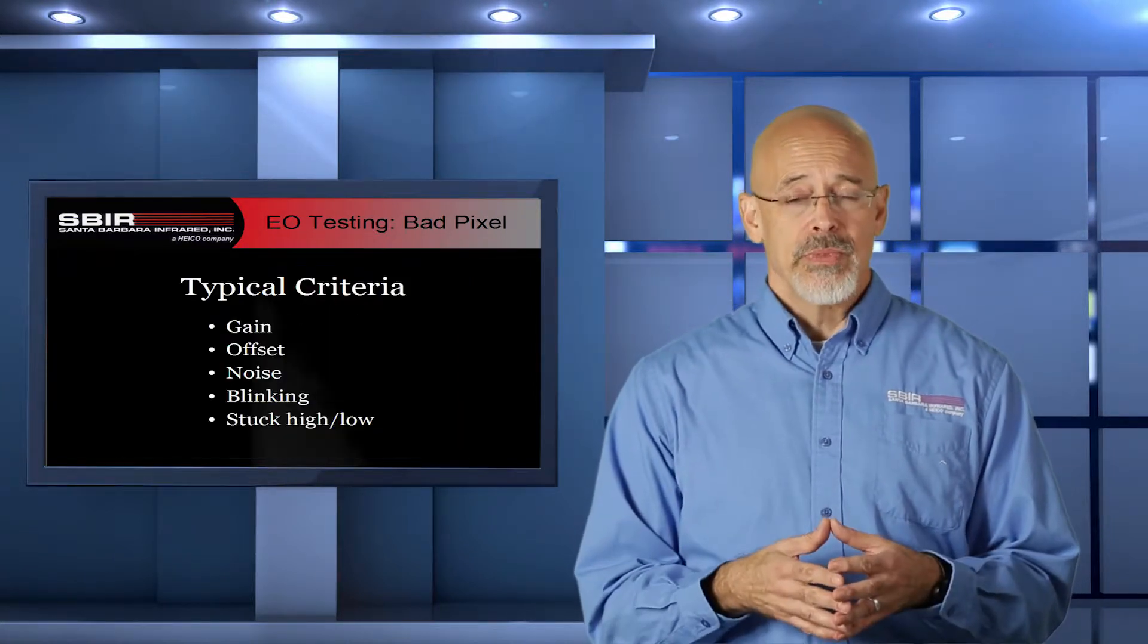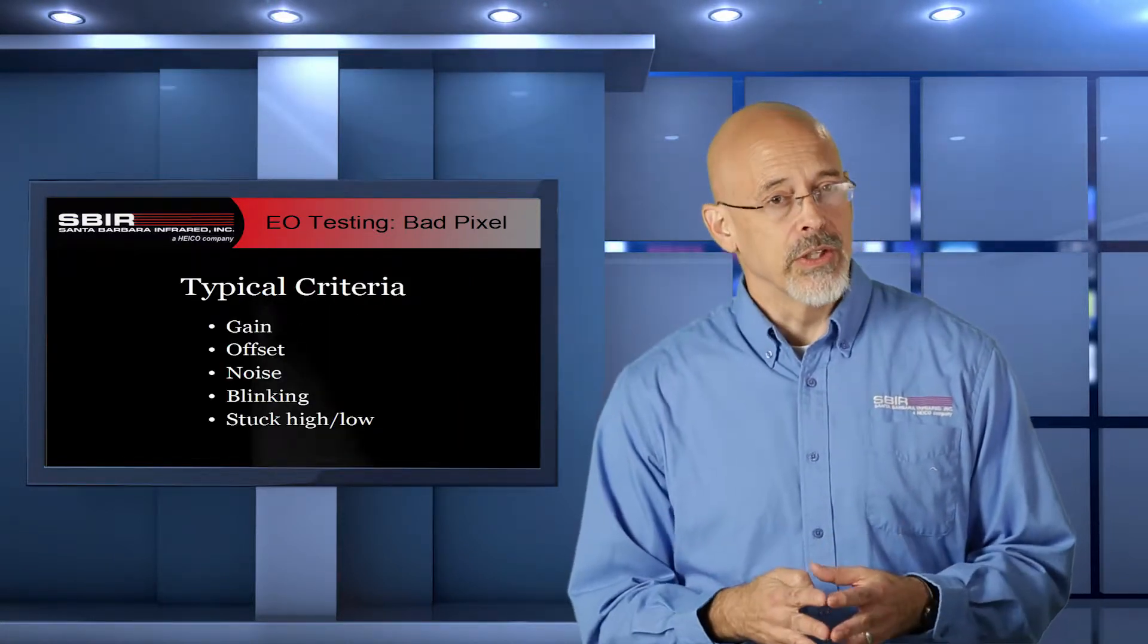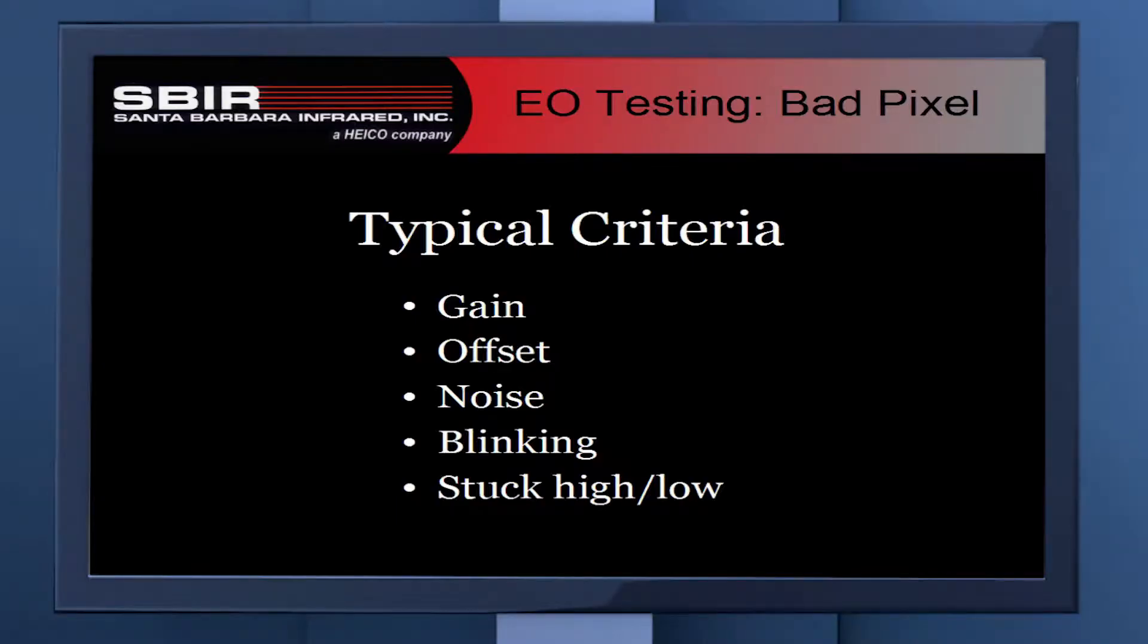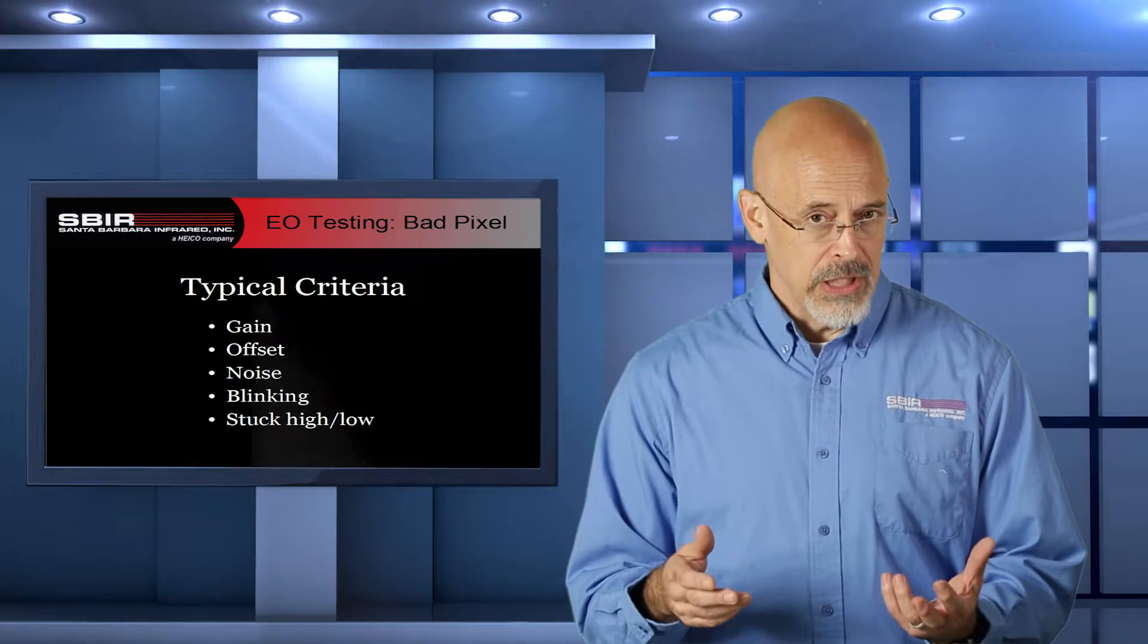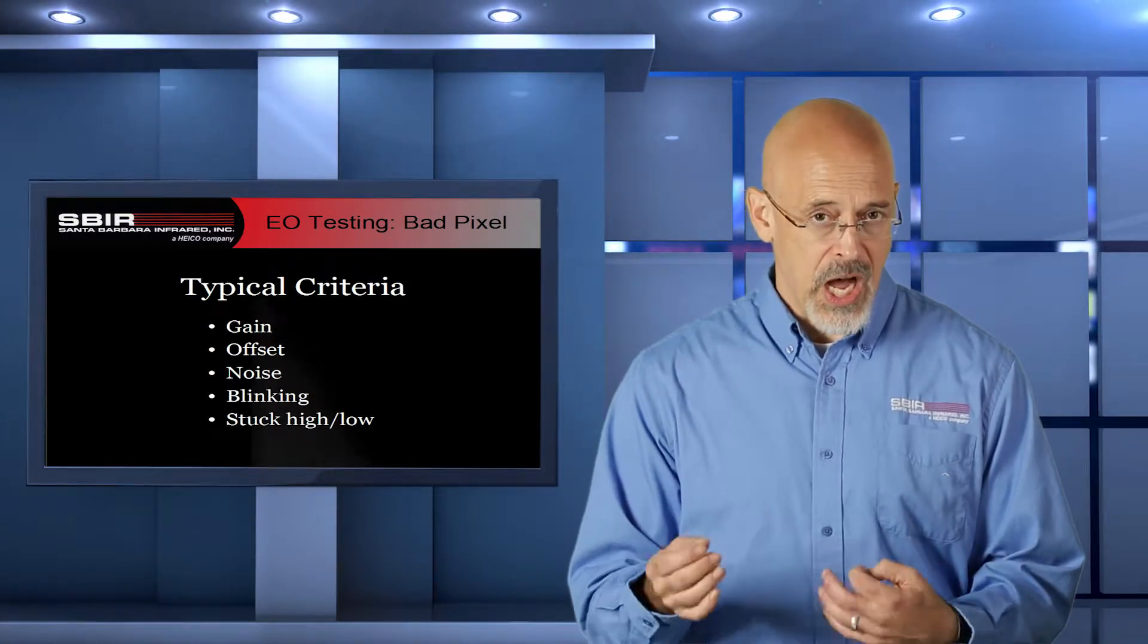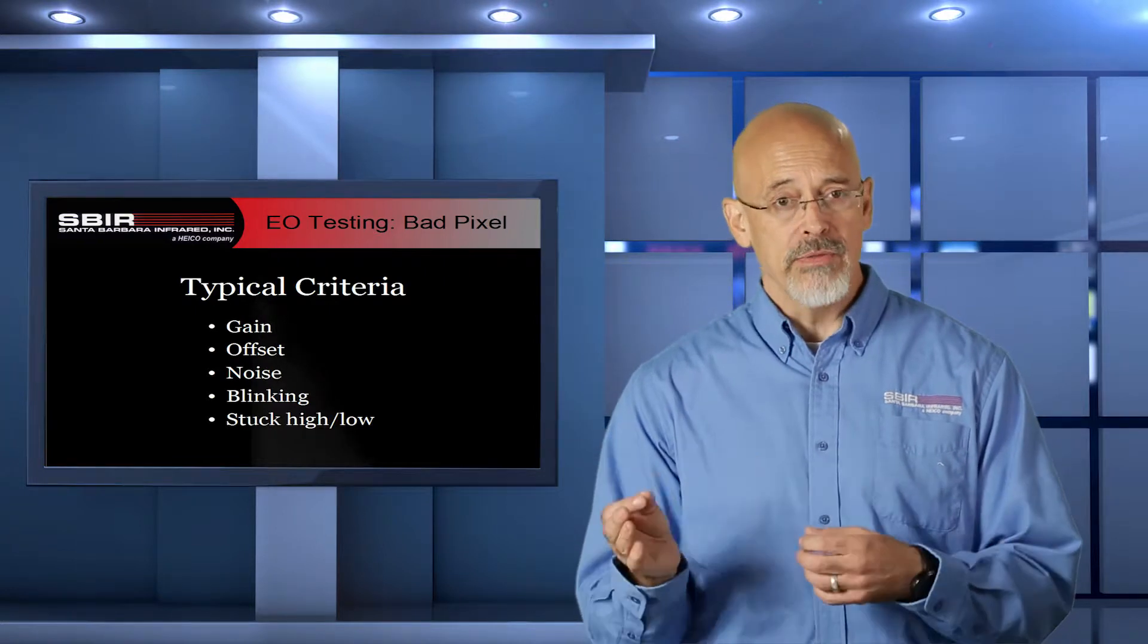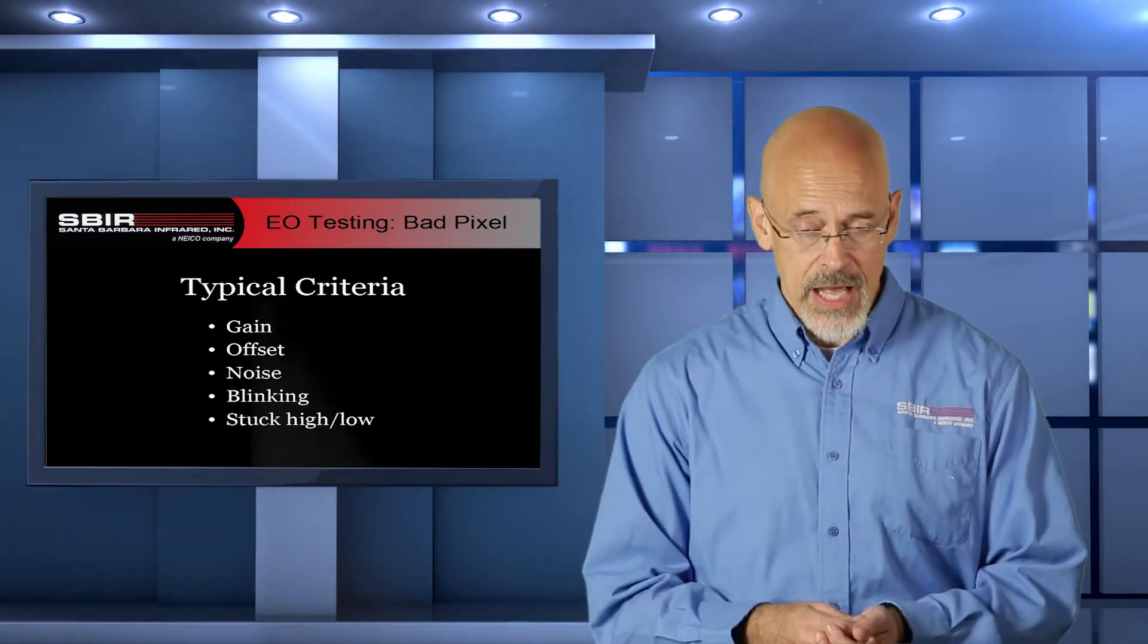So how do we determine a bad pixel? There are four criteria that are typically used for bad pixel analysis: the gain on that pixel, the offset for that pixel, noise on the pixel, and whether or not the pixel blinks. Additionally, you can determine whether a pixel is stuck high or low, and that may be in your specification, but really that's just a part of the other criteria and comes out of that analysis.